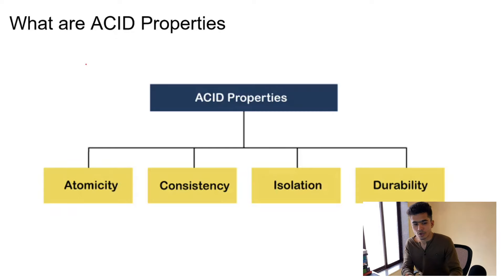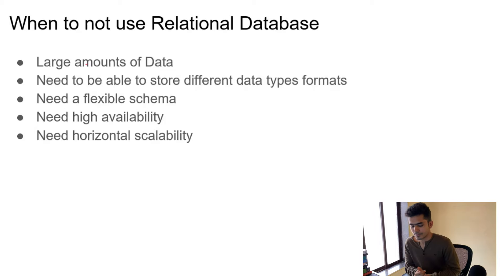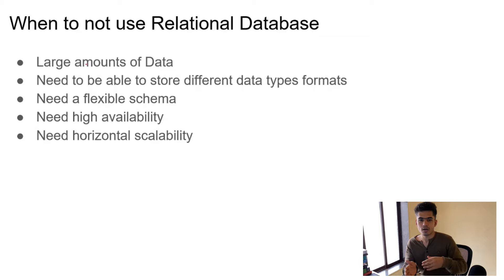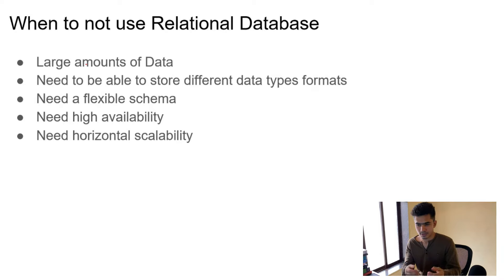You can learn more about ACID properties — I've just given you an overview but I'll provide some resource links in the description. Now, when should you NOT use a relational database? When you have a really large amount of data, you should consider using a NoSQL database, or a data warehouse for large reads. If you want to store different types of data formats or need a flexible schema, a relational database won't work well since each column has a specific data type. Also, if you need high availability or horizontal scaling — we'll talk about vertical versus horizontal scaling in future videos.